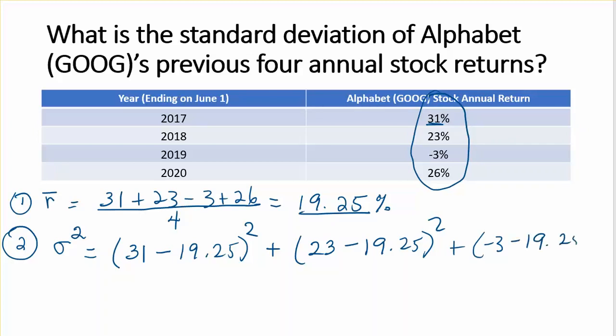When you encounter a return that's negative, please be sure to retain that negative sign. And the 2020 is 26% minus 19.25, squared.